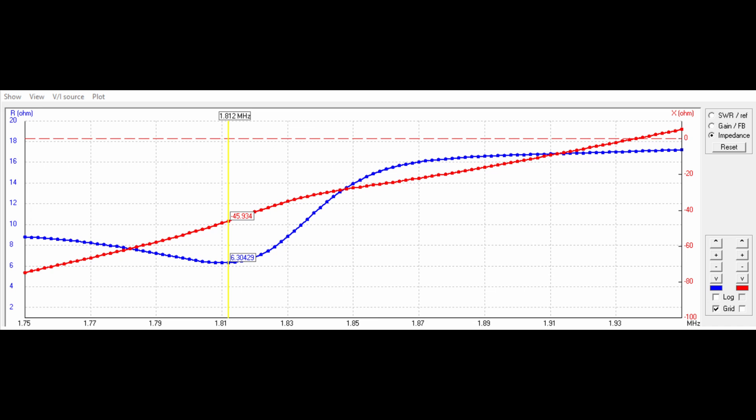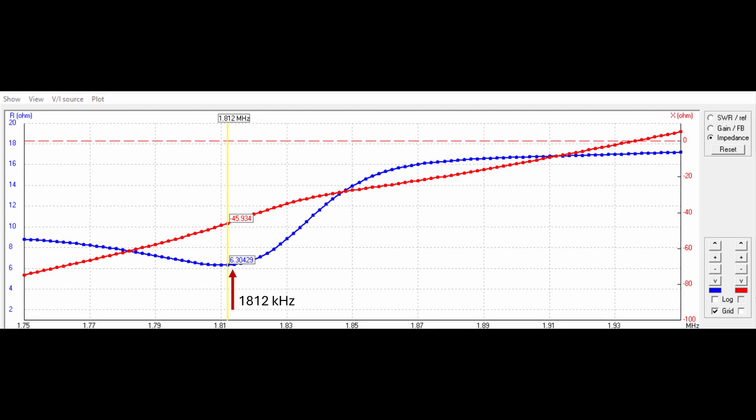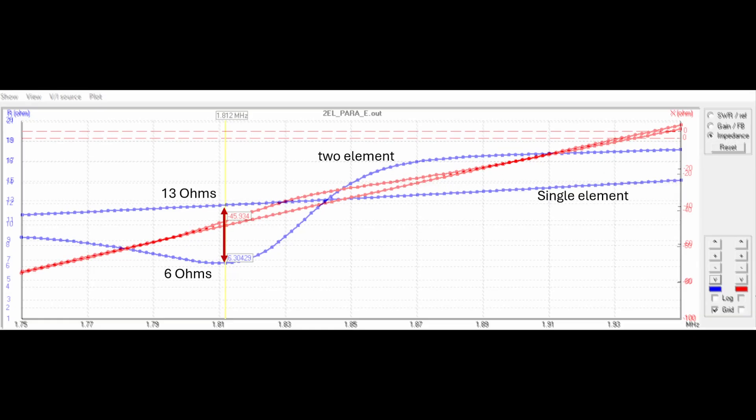Here is a frequency sweep from 4NEC2 with just a single 160-meter top-loaded vertical element. Just like our analyzer sweep in the field, we have a gradually increasing real R curve. Here I add a second element into the model, and we now see that same R dip, now at 1812 kilohertz. That's where this element is tuned in the model. It looks just like the dip we see in the field, a drop from about 13 ohms to 6 ohms.